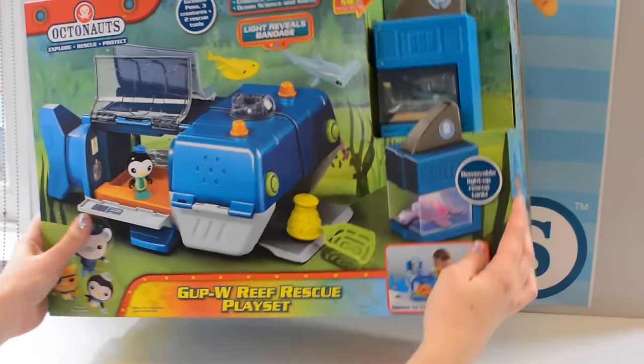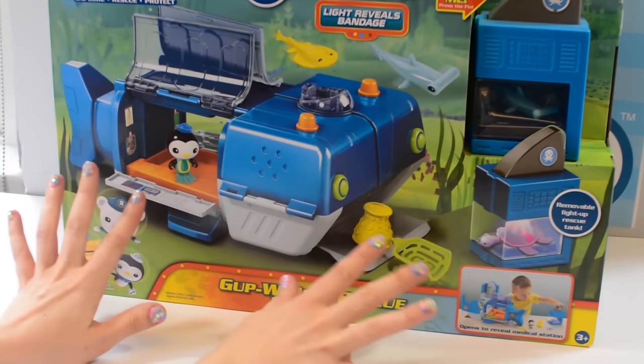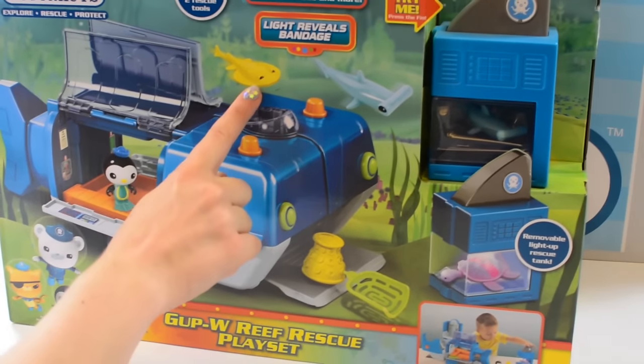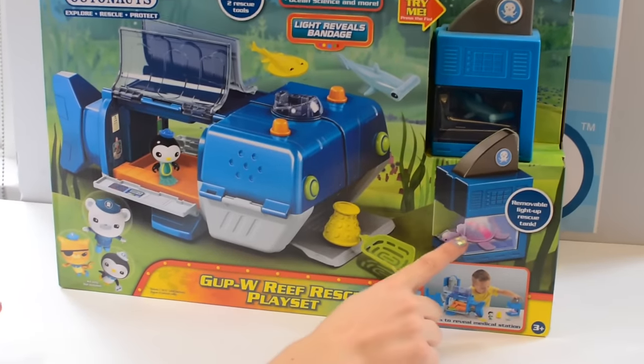Wow! It's the Gup W! Look how big it is! It comes with Peso, an electric torpedo ray, hammerhead shark, and even a sea turtle!